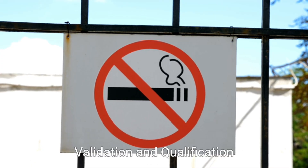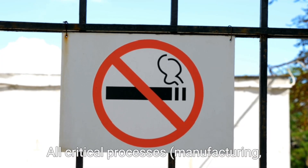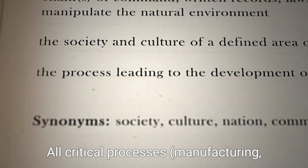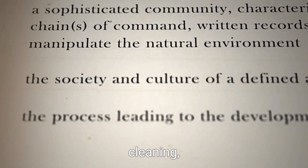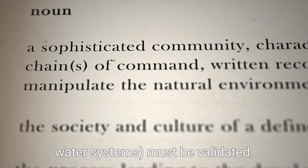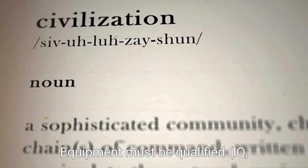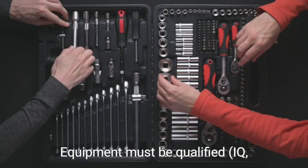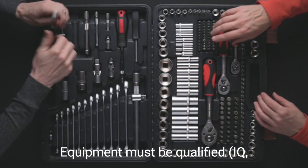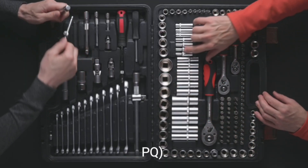Validation and qualification: all critical processes — manufacturing, cleaning, HVAC, and water systems — must be validated. Equipment must be qualified: IQ (Installation Qualification), OQ (Operational Qualification), and PQ (Performance Qualification).